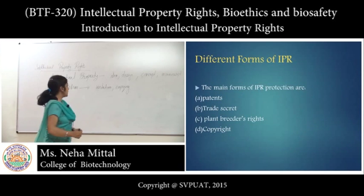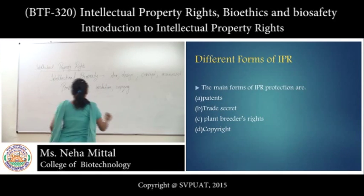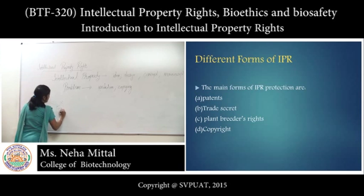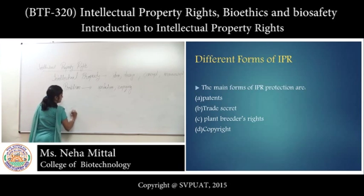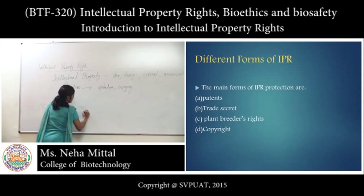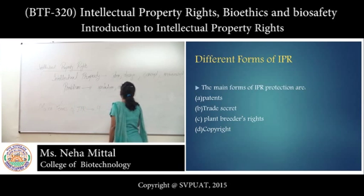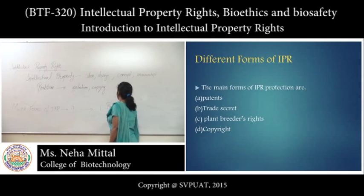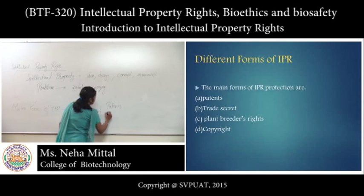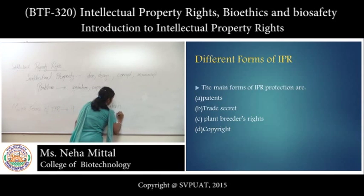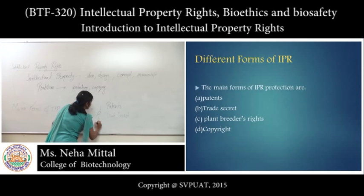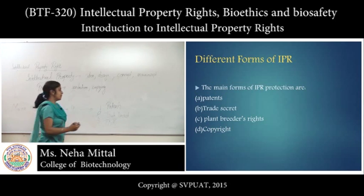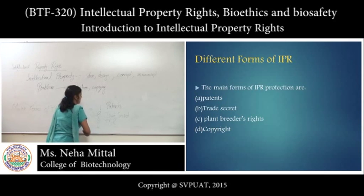Intellectual property rights can be defined as the rights given to the original inventor or originator by the government of the country in return for their invention, as long as it is not detrimental to society. The major forms of IPR are: first, patents; second, trade secret; third, plant breeder rights, or PBR; and fourth, copyright.